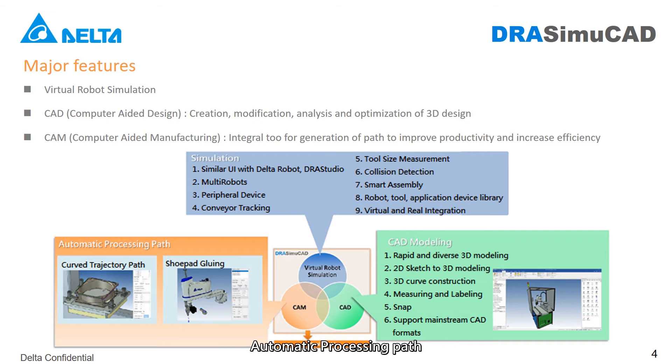Automatic processing path features include: First, curved trajectory path. Second, shoe pad gluing.